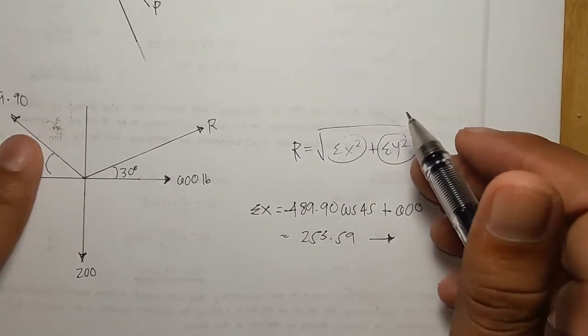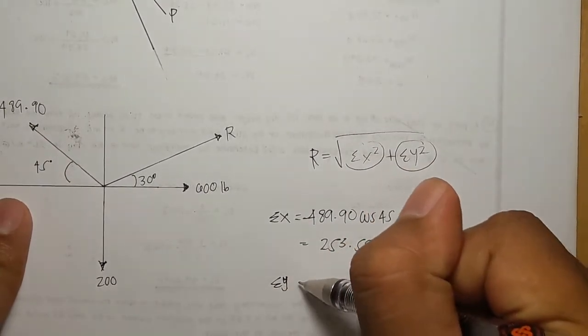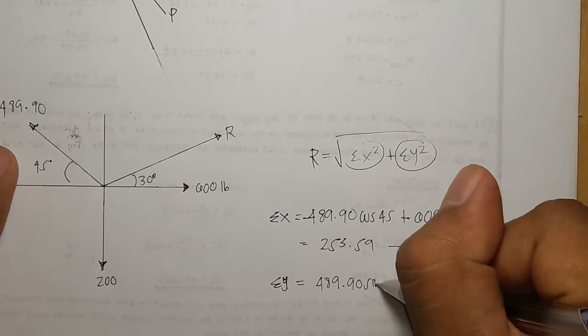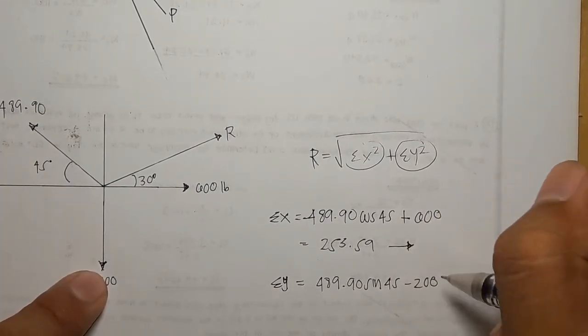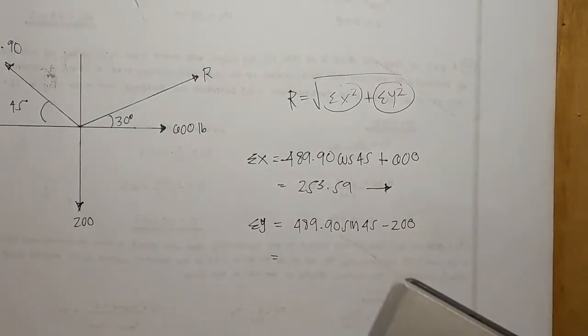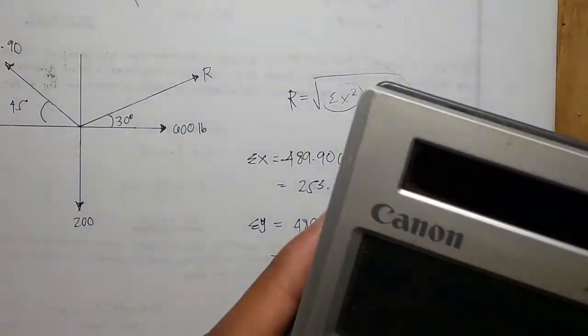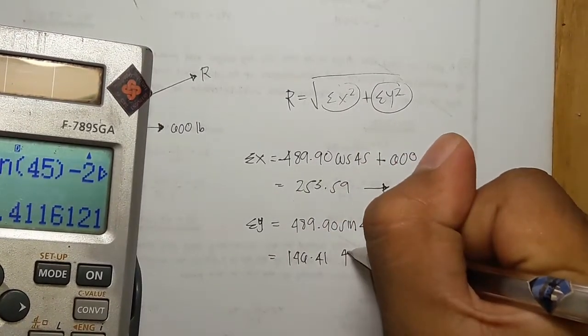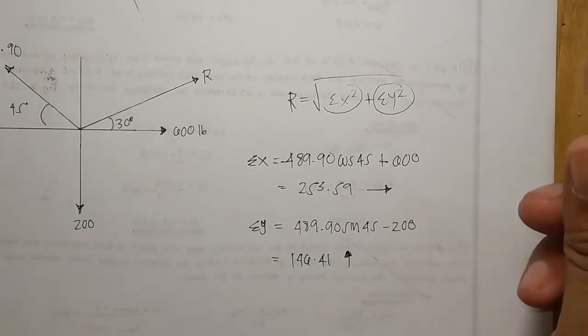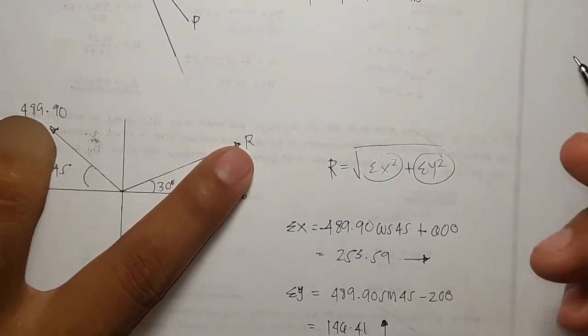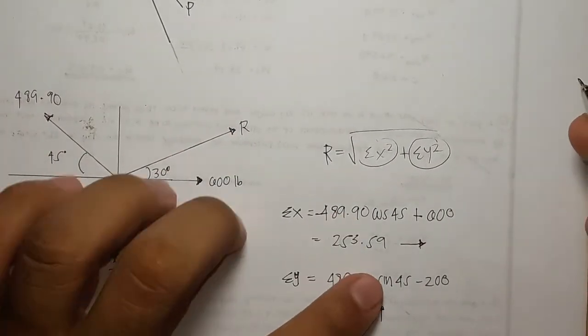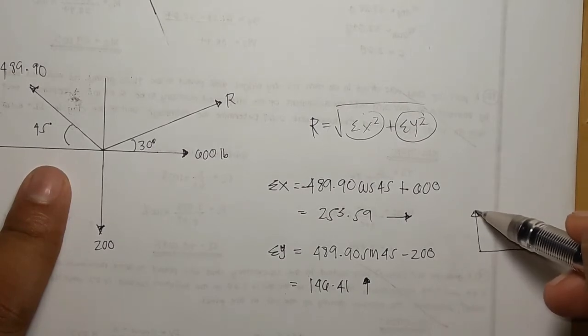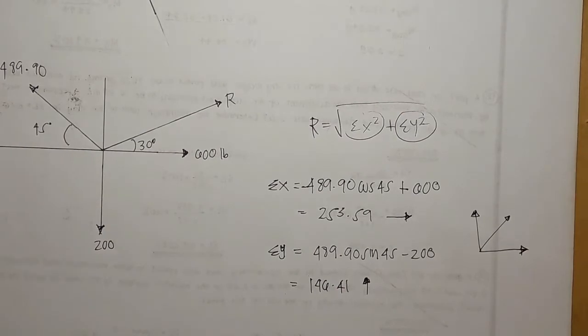Next is our y component. So summation of forces y, it is positive 489.90 sine 45 minus 200, so we get 146.41 positive. It is correct, the direction of our resultant is correct because as you can see the x component and the y component is like this.